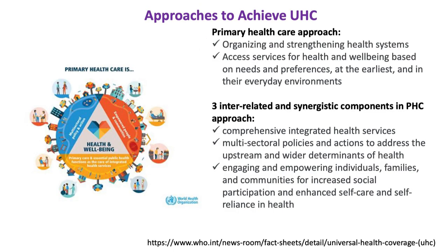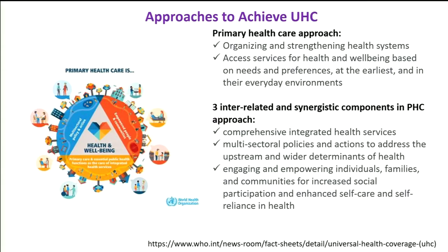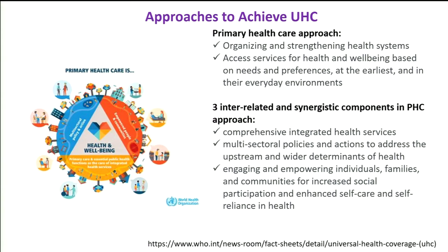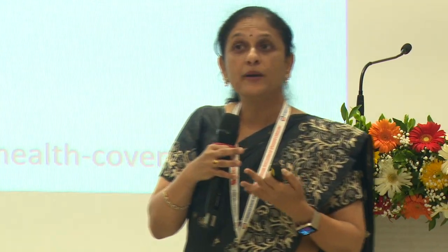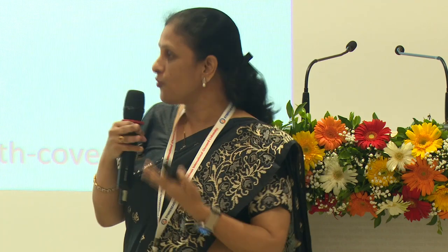To achieve universal health coverage, there are two main strategies. One is the primary health care approach — delivering comprehensive services as close to people as possible, with three interrelated synergistic components including multi-sectoral policies and engaging communities to voice what they want. In primary health facilities, there are committees with community representatives who should have a say in their community's needs. However, this component is very weak in our system — people just accept whatever is provided without questioning quality or accountability.